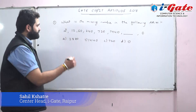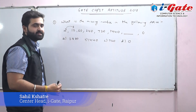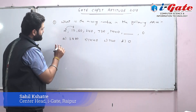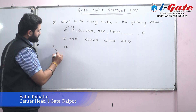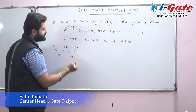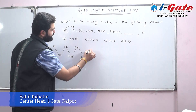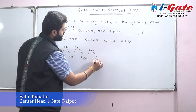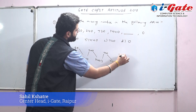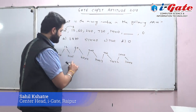In a series question, we check the relation between consecutive terms — what to add, multiply, divide, or subtract. Between 2 and 12: 2 × 6 = 12. Then 12 × 5 = 60. Then 60 × 4 = 240. Then 240 × 3 = 720. Then 720 × 2 = 1440. So the multipliers are 6, 5, 4, 3, 2.